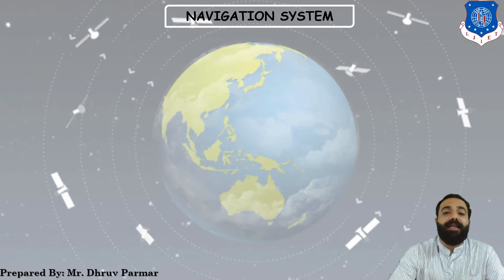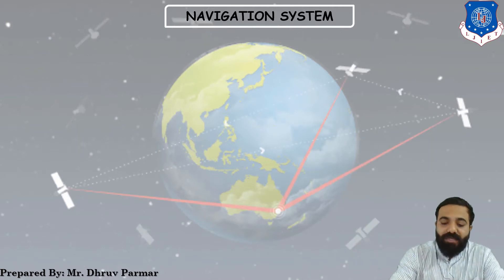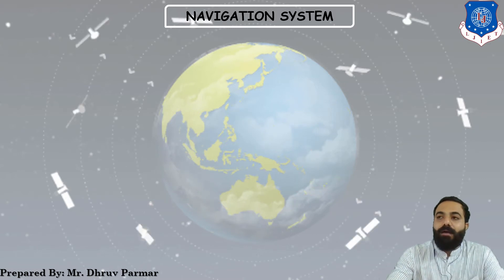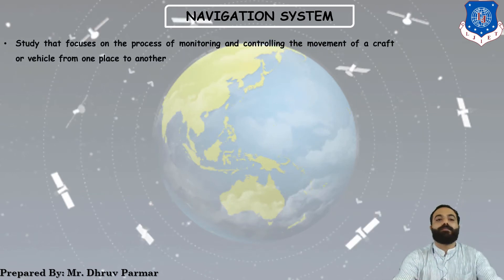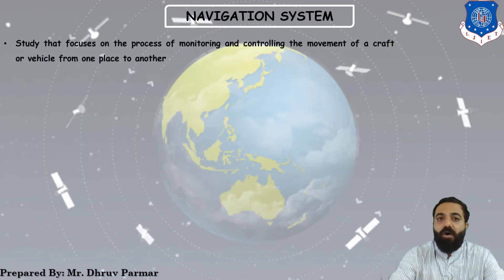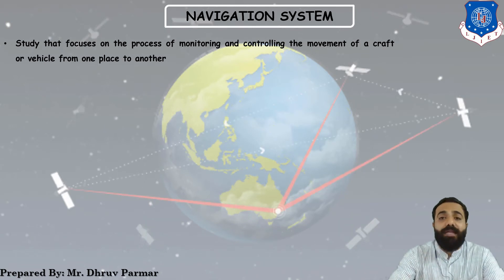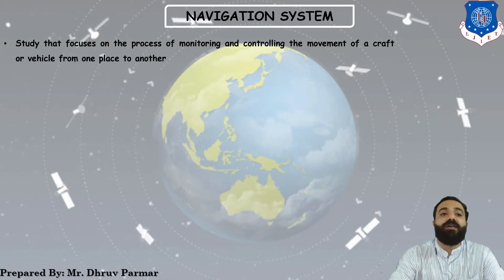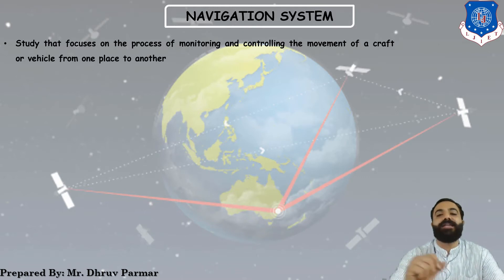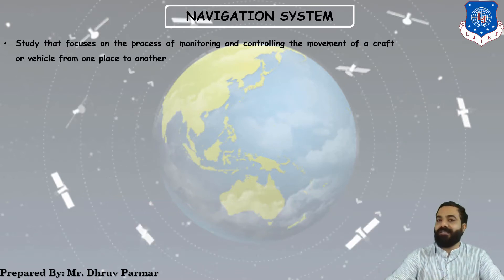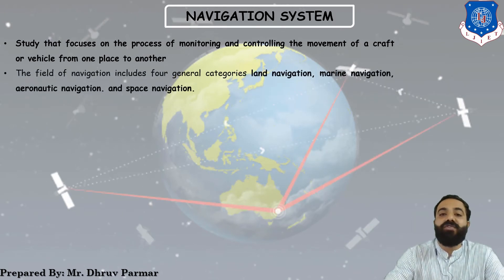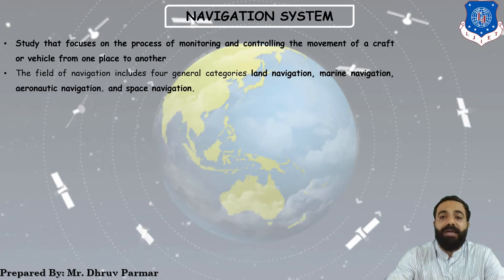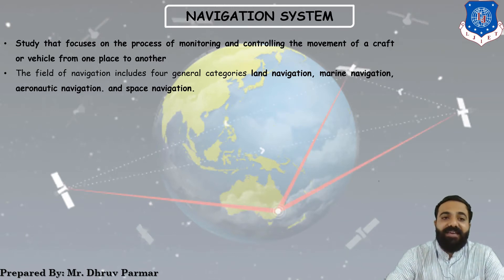The next topic is navigation systems. Navigation means to navigate — to show a direction. It involves studies that focus on monitoring and controlling the movement of craft or vehicles from one place to another. The field of navigation includes four general categories: land navigation, marine navigation, aeronautic navigation, and space navigation.